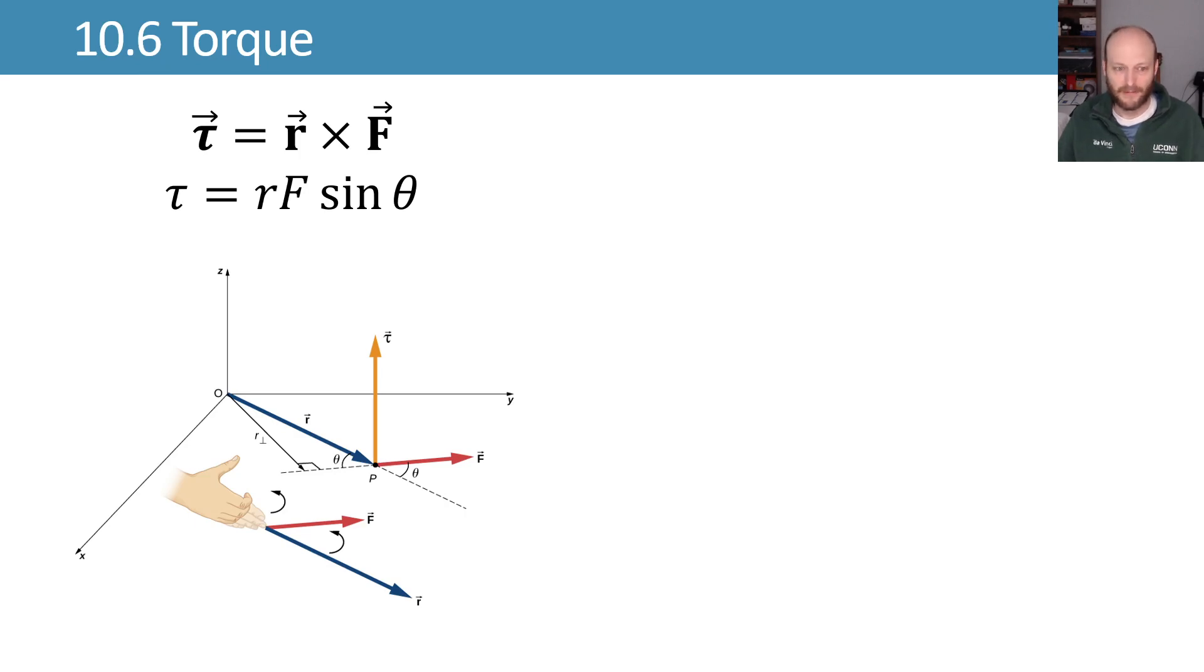Why do things spin? Turns out you got to push them to make them spin, and we can quantify this with this concept called torque. We say that our torque τ is equal to r cross F. That gives us rF sin θ.